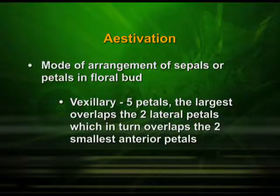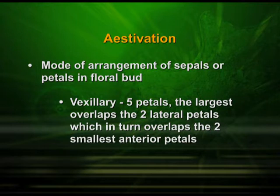There is another type of aestivation called vexillary aestivation, in which there are five petals. The largest petal overlaps the two lateral petals, which in turn overlap the two smallest anterior petals.